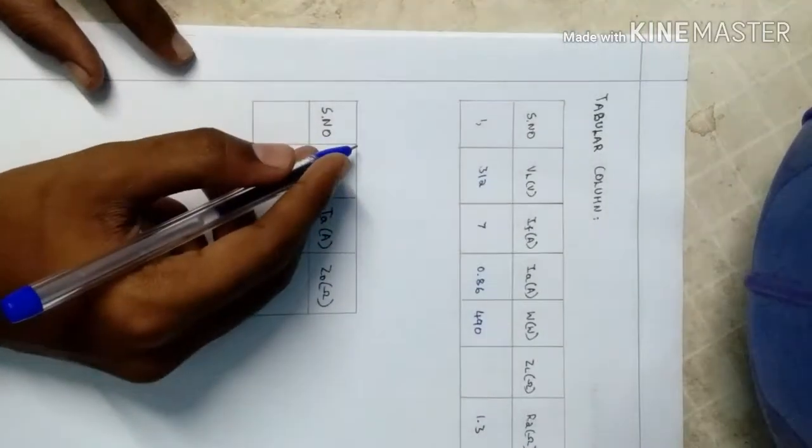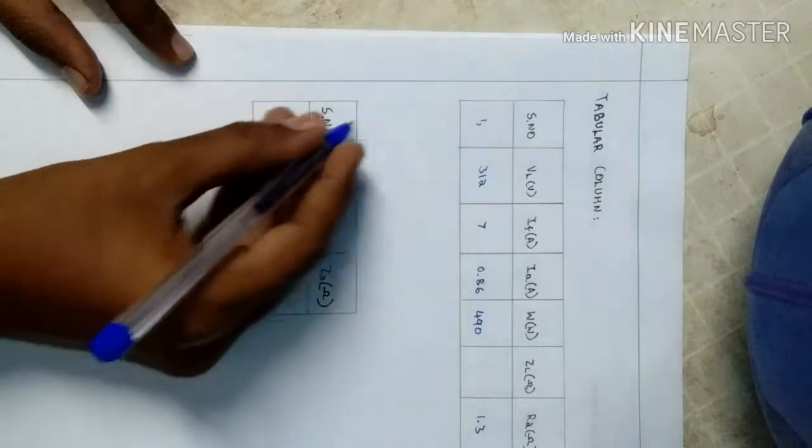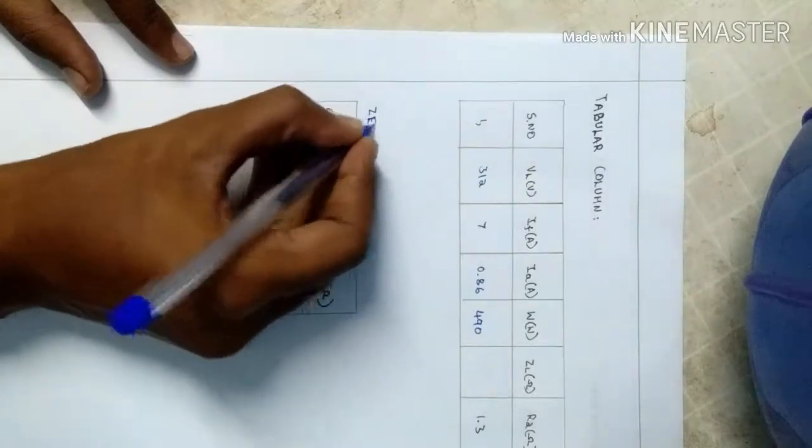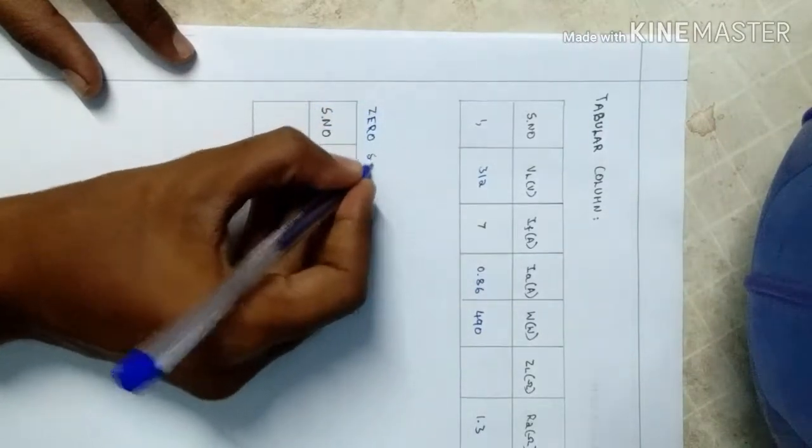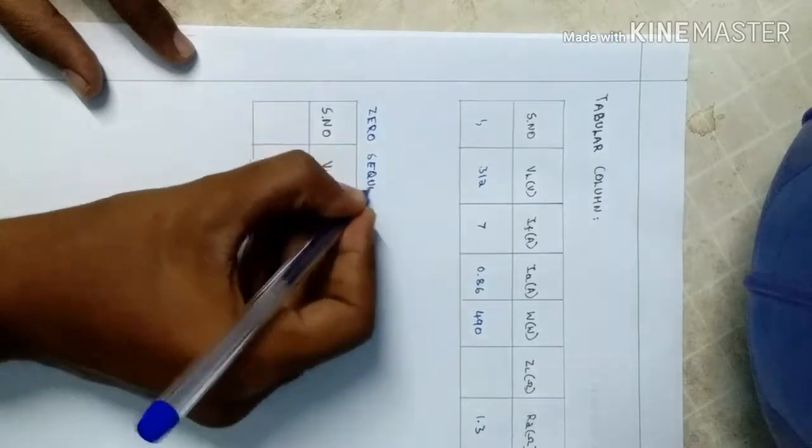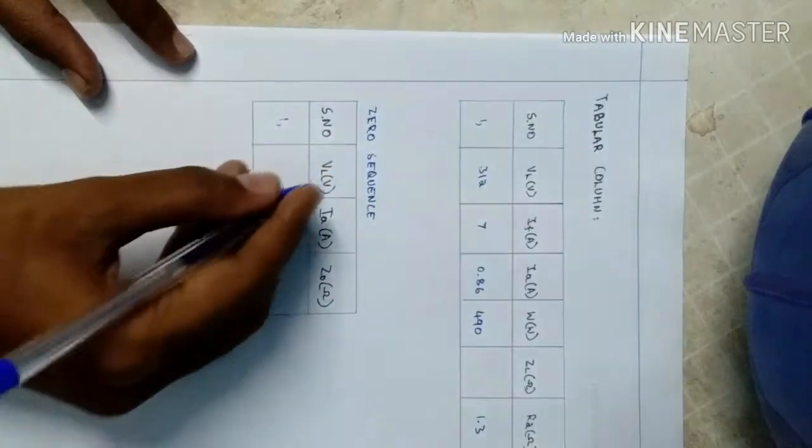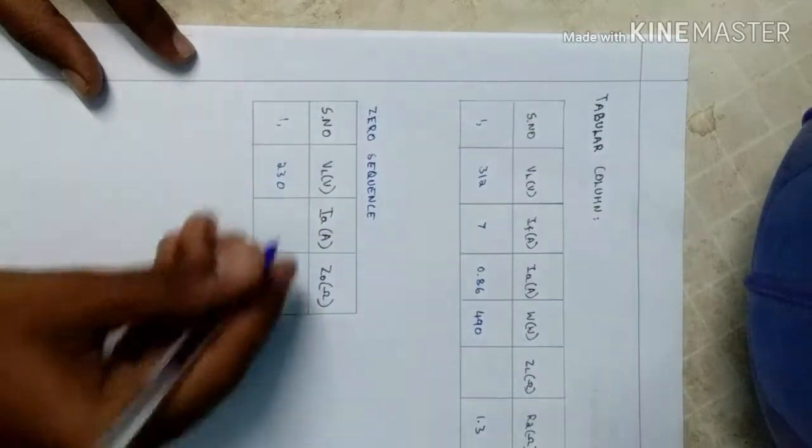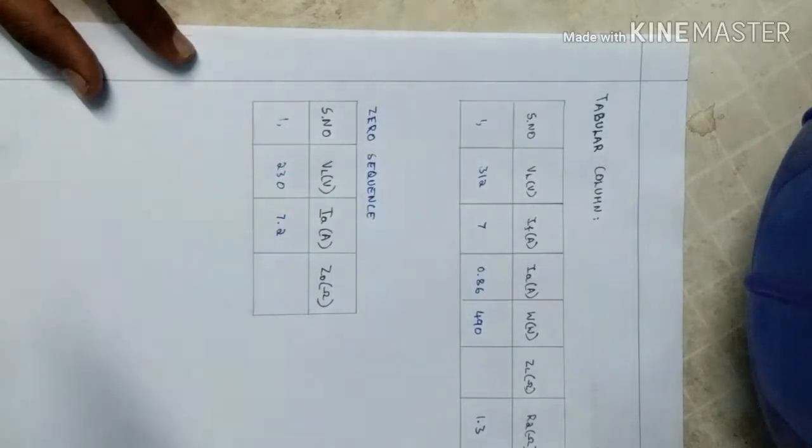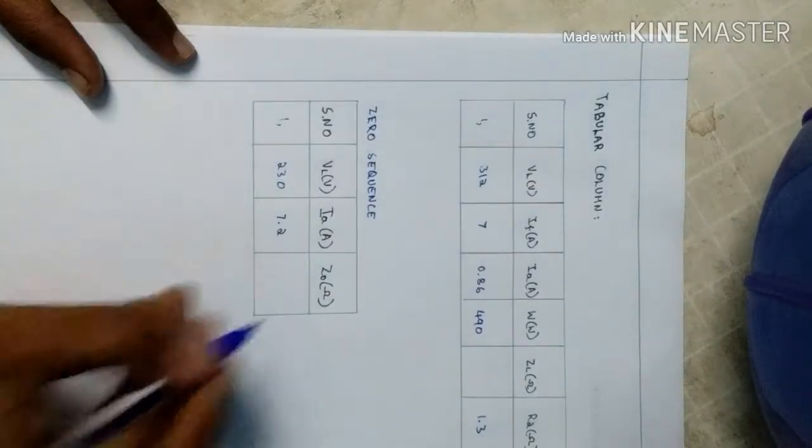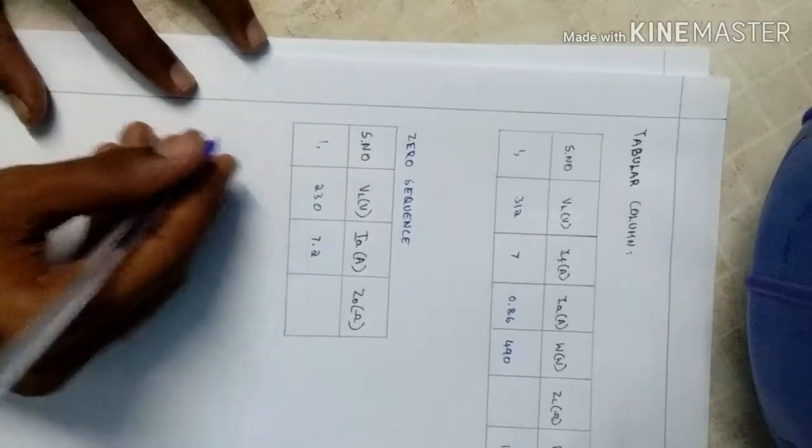For zero sequence, the tabulation will be VL is 230 volt, IL is 7.2, and we have to find Z naught.